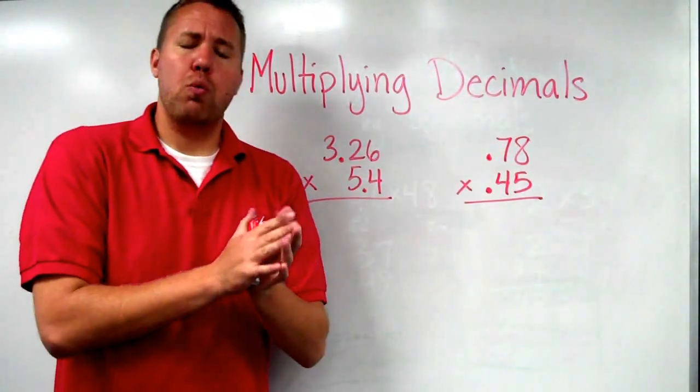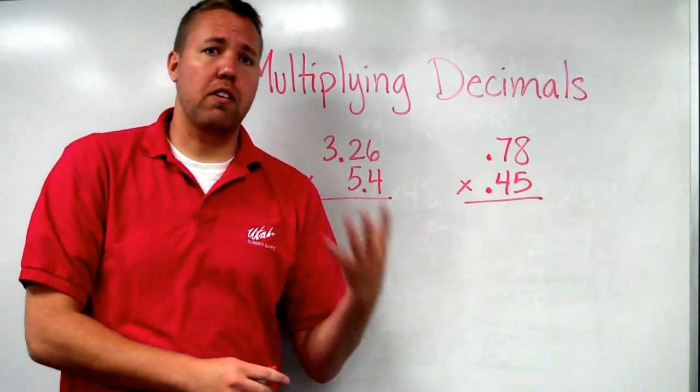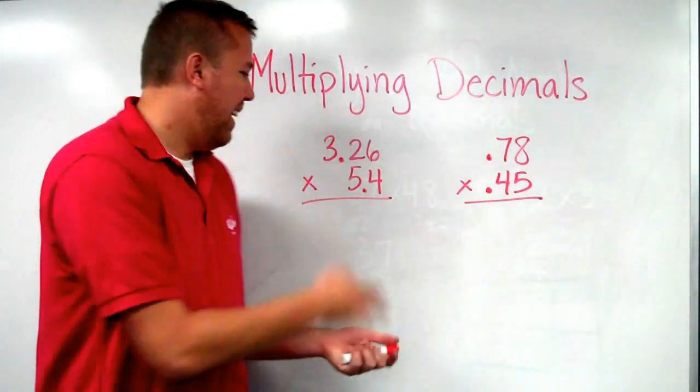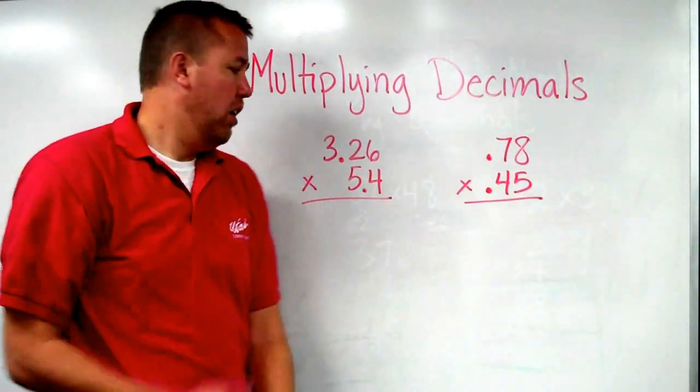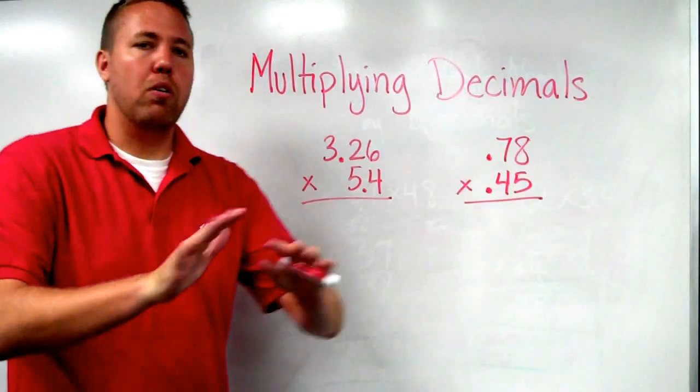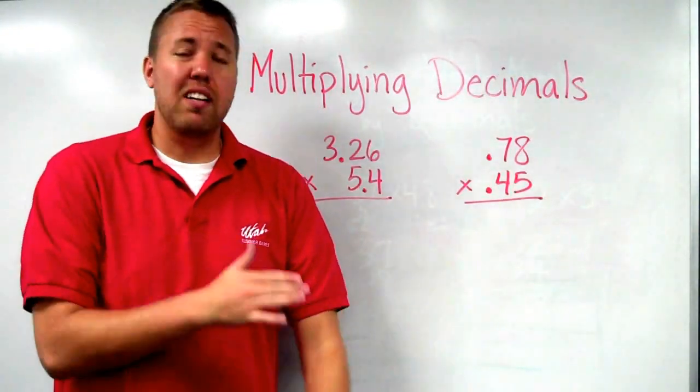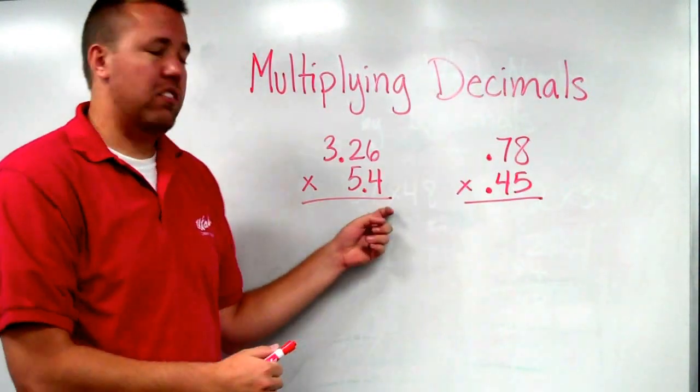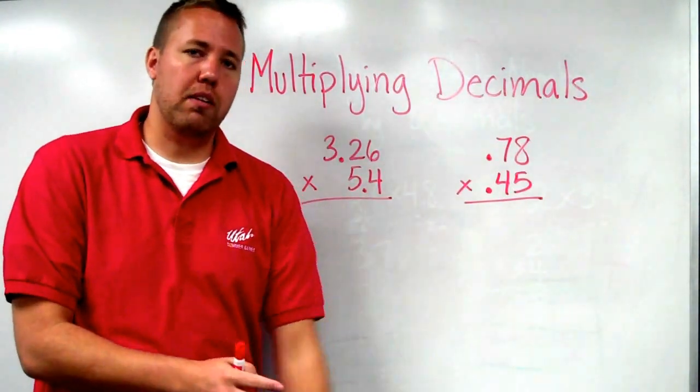When we add and subtract decimals, the four words that save our life is line up the decimals. In this, you can totally tell, Mr. Goff, you're not lining up the decimals. We need to line up the decimals. Hold on. Not so fast. Not when we're multiplying decimals. Not at all. We just line it up just like the algorithm would state.